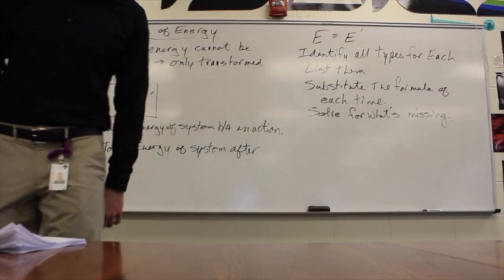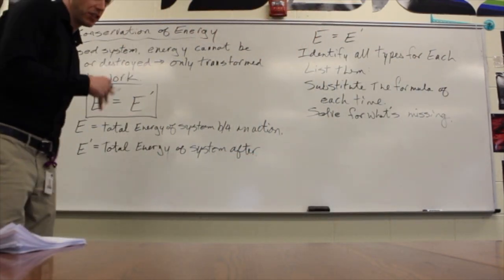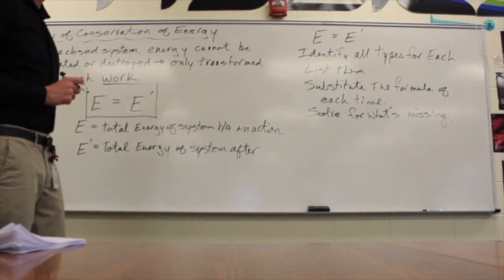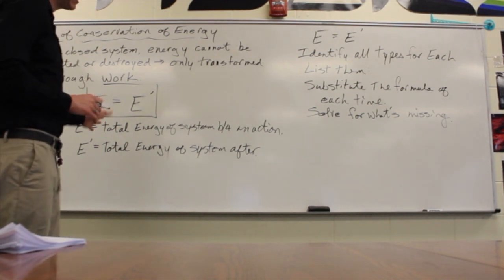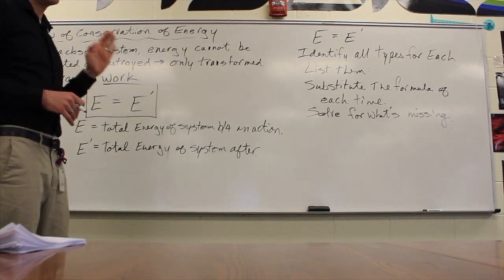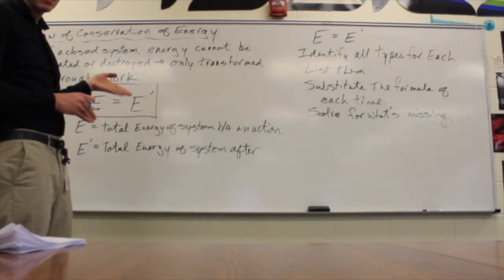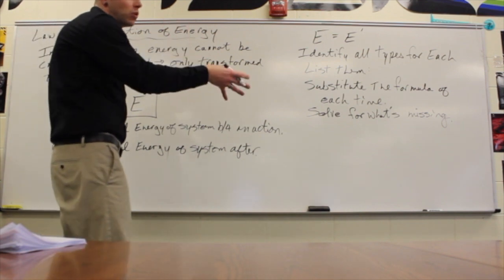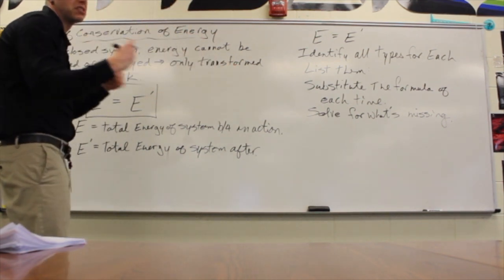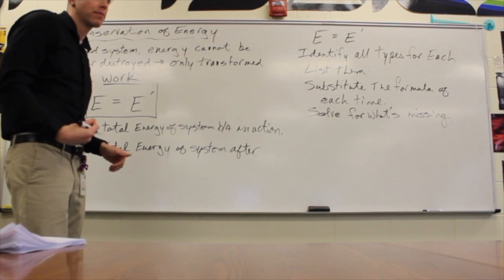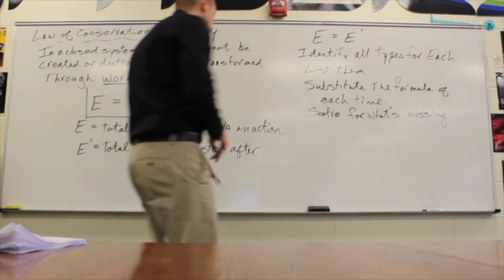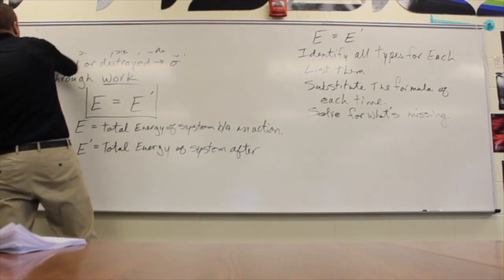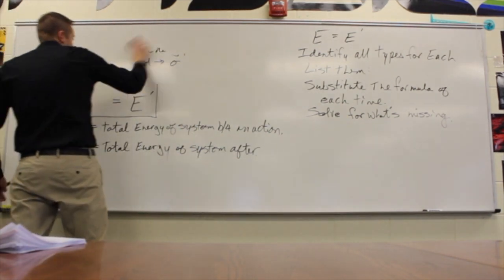That's a basic outline of what we're going to be doing. Conservation works this way both in energy and in momentum later. The basic outline is simple: identify what the action is, determine what kind of energy we have before, determine what kind of energy we have afterwards, and then the rest is just substitution and solving.